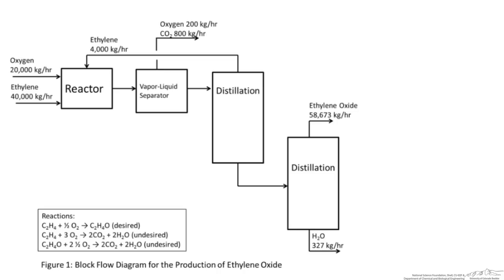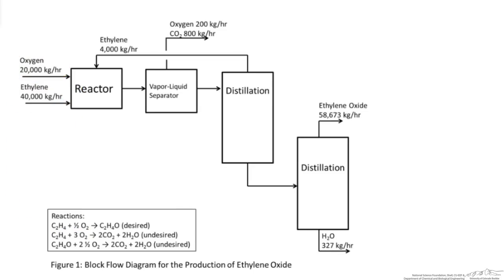This process takes ethylene and oxygen and converts them through a catalyzed process to ethylene oxide. In addition to this main reaction, we also have two side reactions, creating carbon dioxide and water. The main reaction does not feature 100% conversion of the reactants,